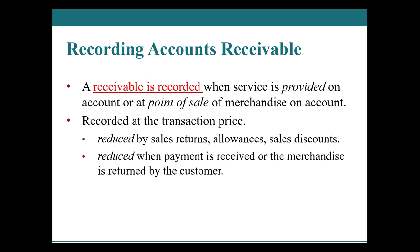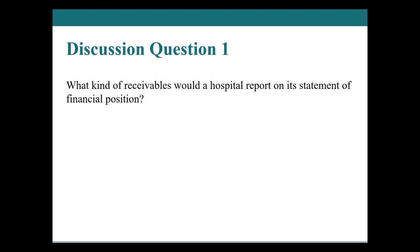Here's a question: what kinds of receivables would a hospital report on its statement of financial position? Looking at its receivables, you might find amounts due from the provincial government — the hospital sends claims to government insurers for different patient services. Perhaps they're doing studies funded by a grant and are waiting for that grant money to come in. There might also be amounts due from private healthcare insurance companies such as Manulife or Sun Life — they're expecting to receive funds for those reasons.